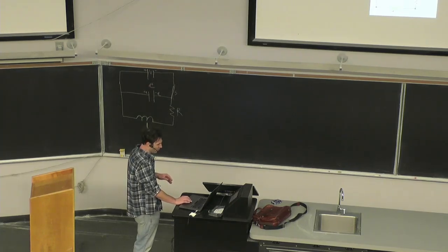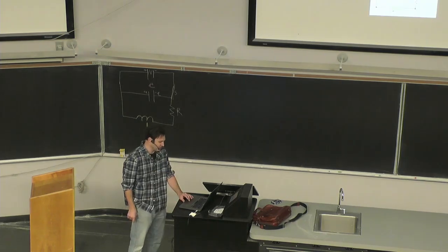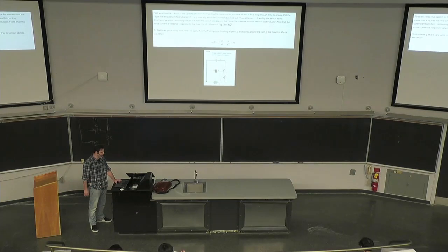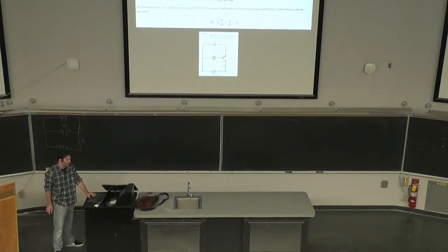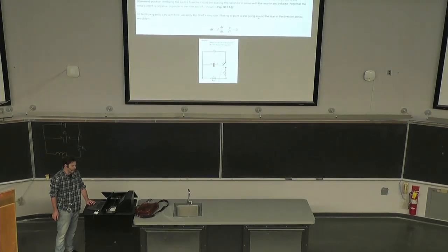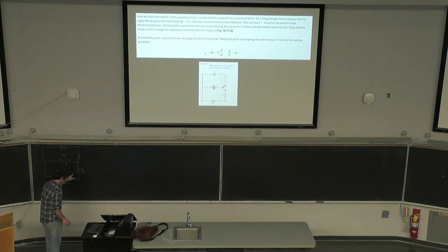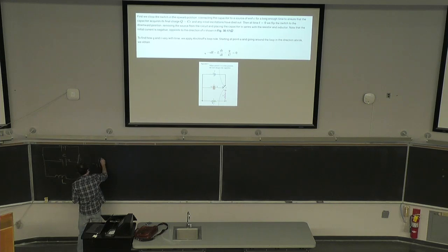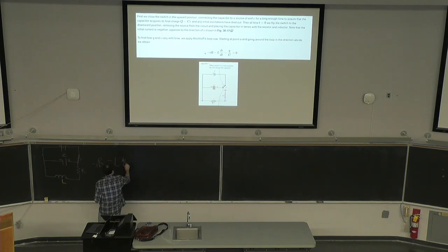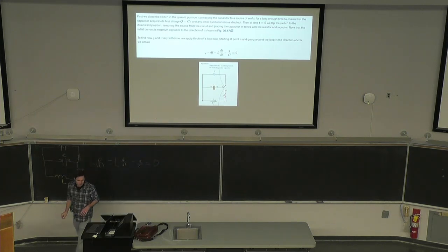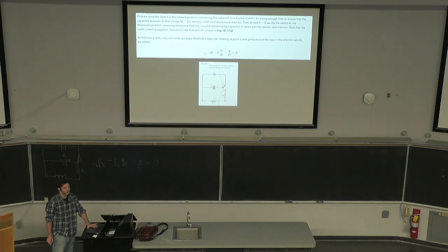To find out how Q and I vary with time, we apply Kirchhoff's loop rule starting at point A and going around the loop in the direction A, B, C, D, A. We obtain the total voltage drop: minus IR, minus L times dI/dt, minus Q over C equals zero. This is our first differential equation describing an RLC circuit.